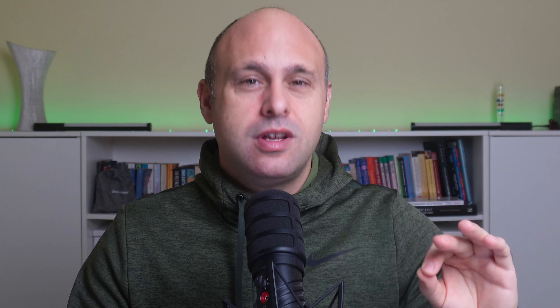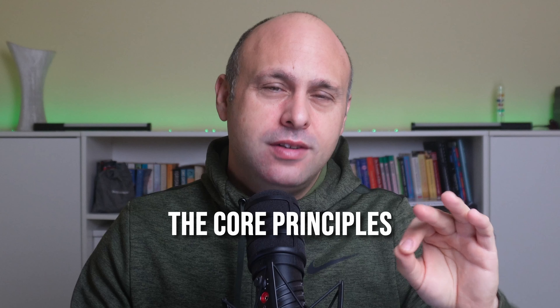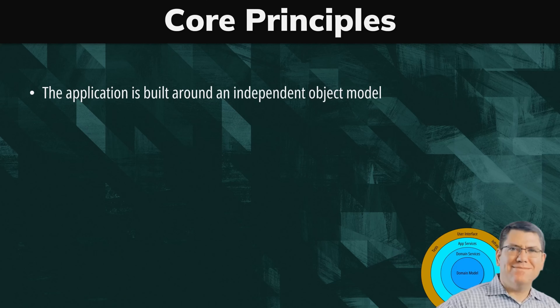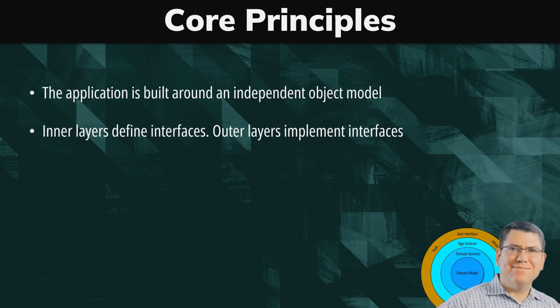Palermo defines four core principles of the onion architecture: the application is built around an independent object model; inner layers define interfaces; outer layers implement interfaces; the direction of coupling is towards the center; and the application core can be compiled and run separate from infrastructure.